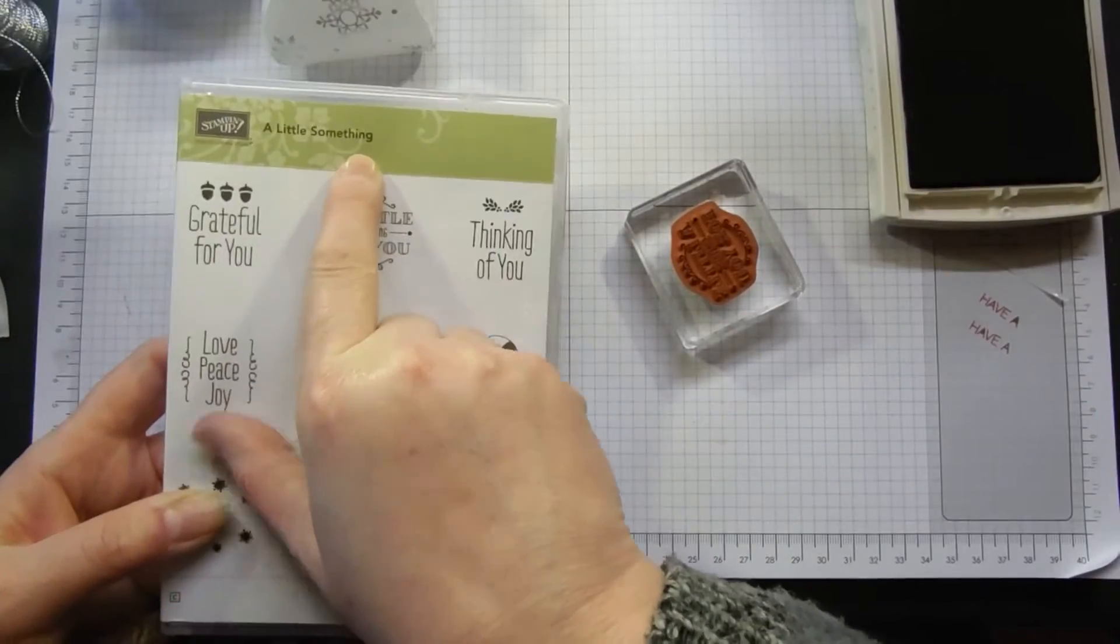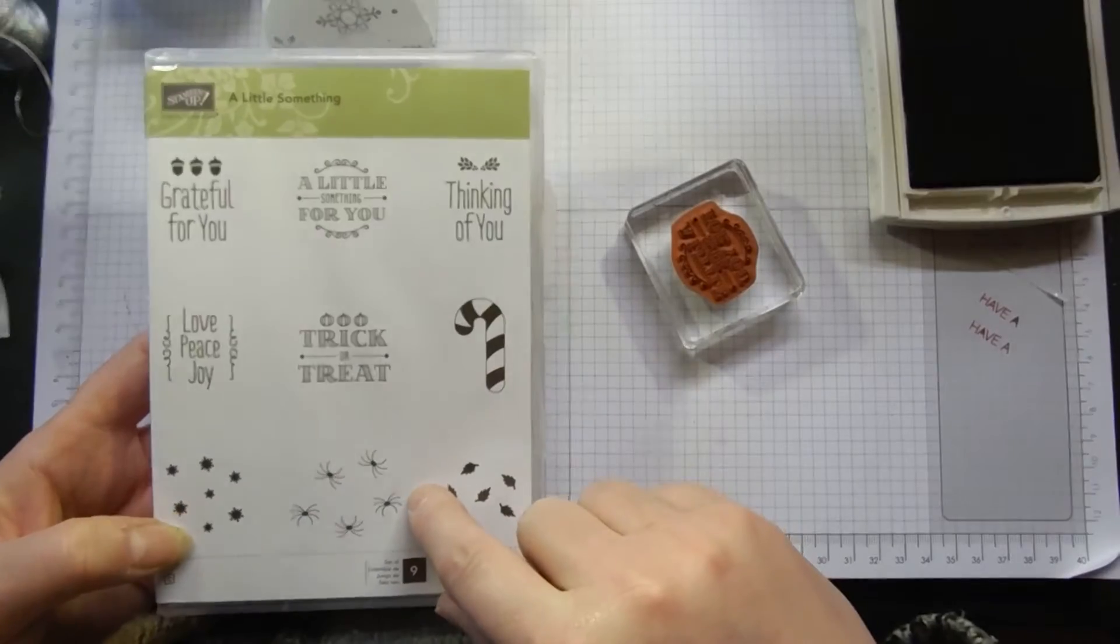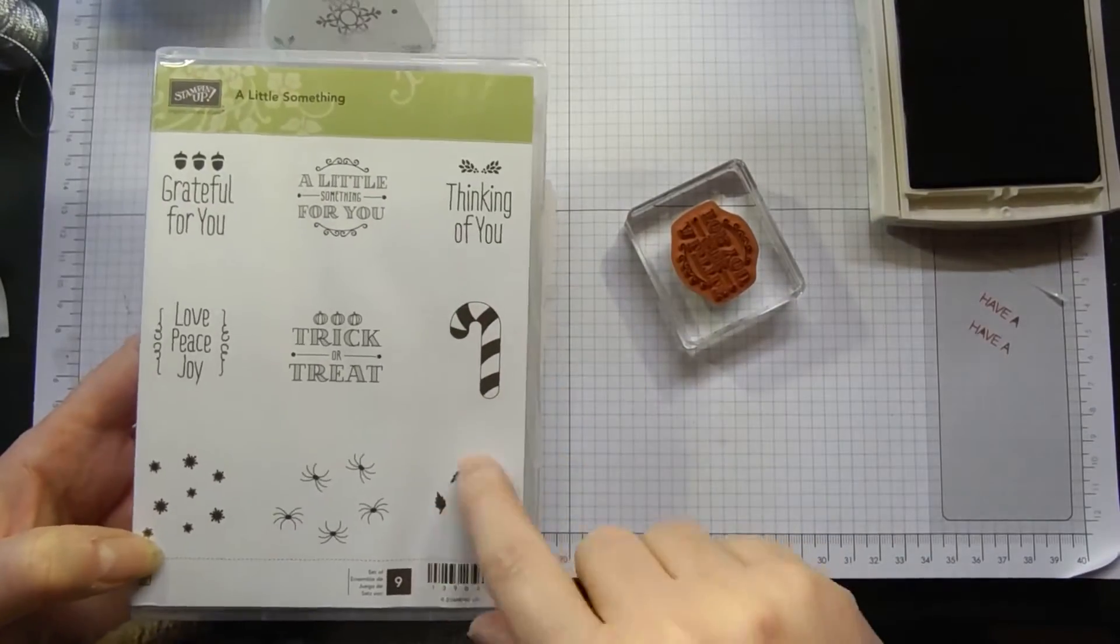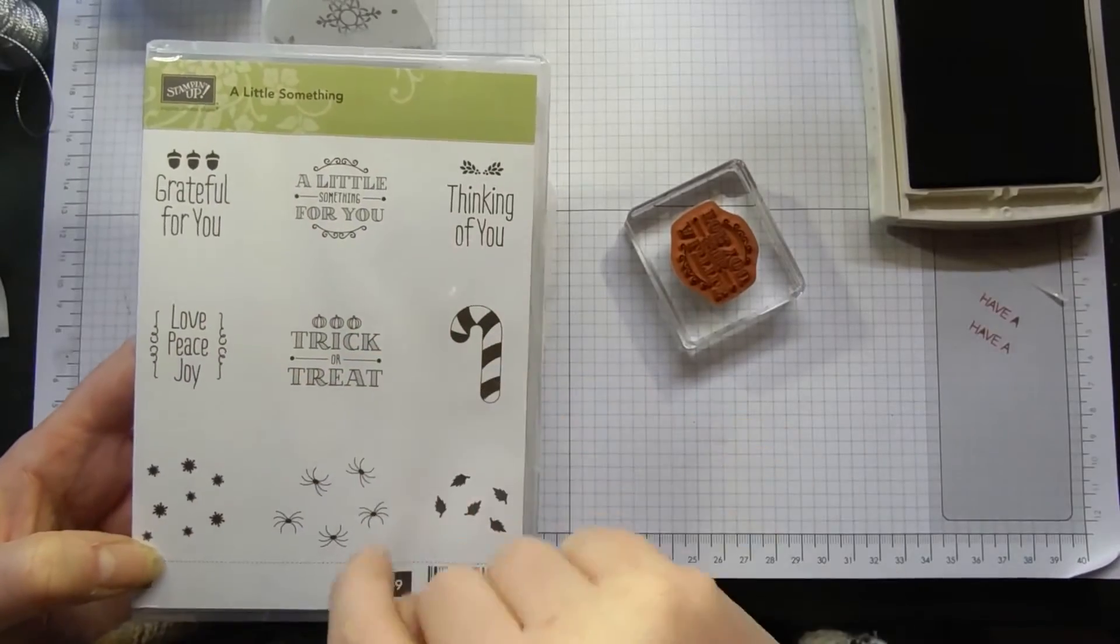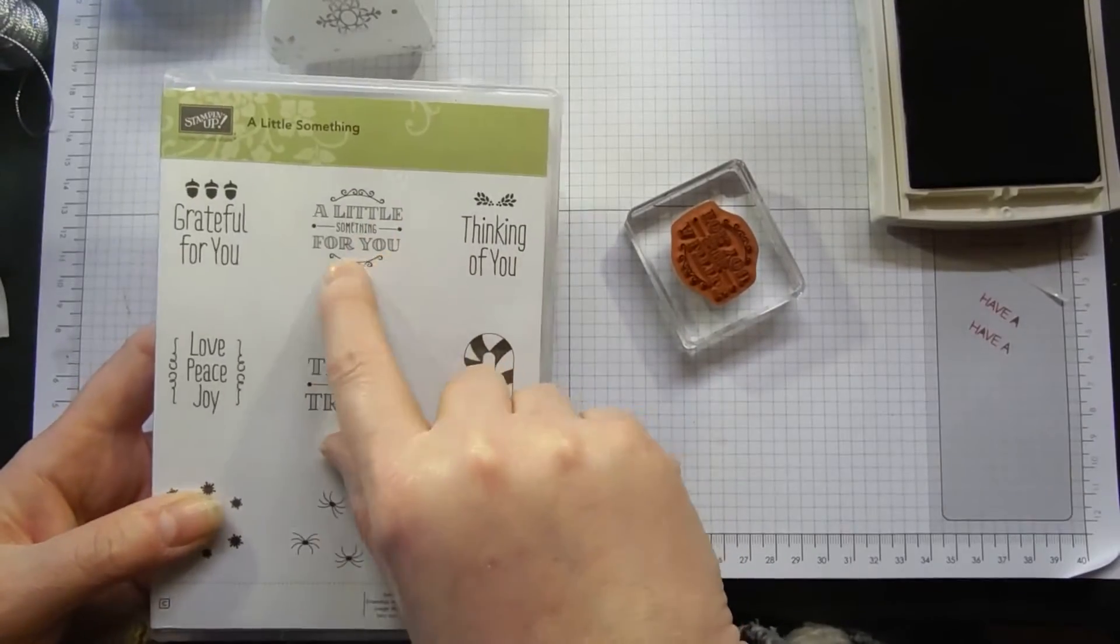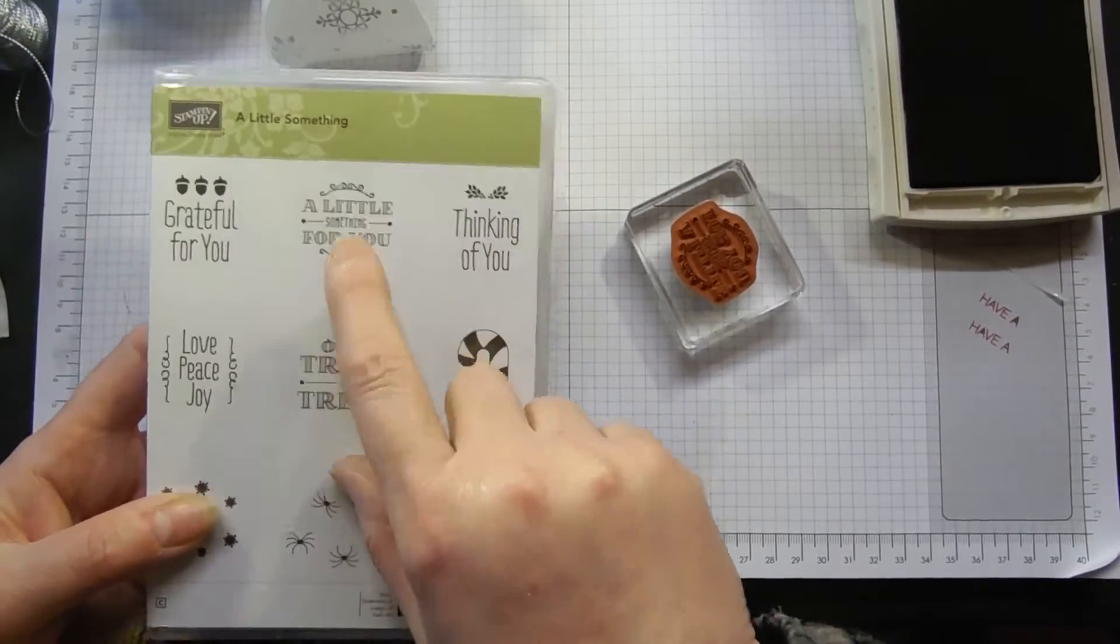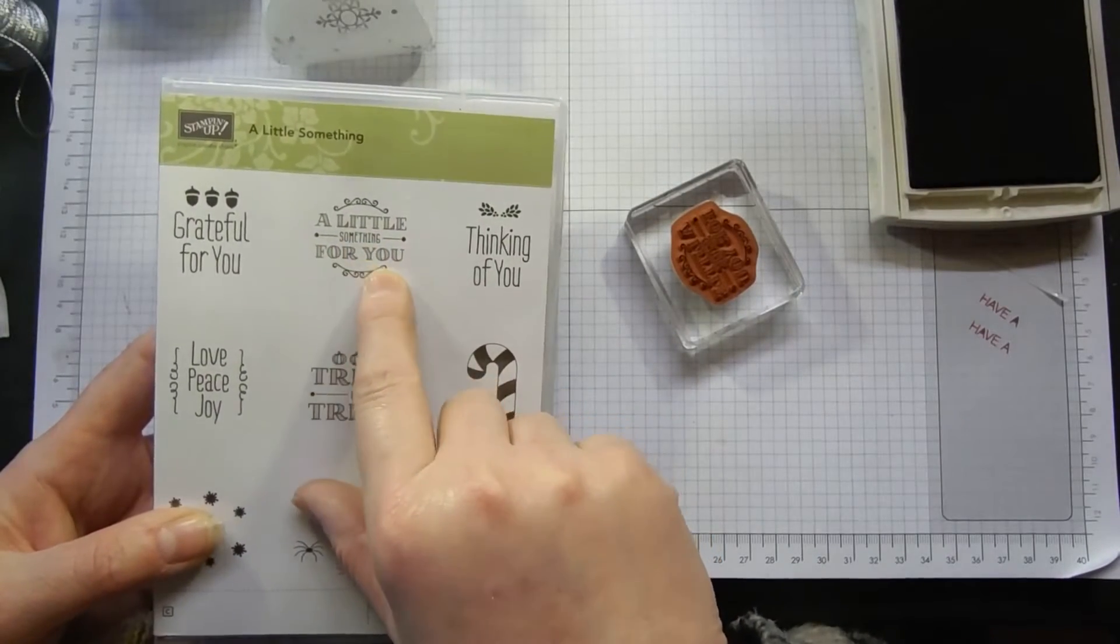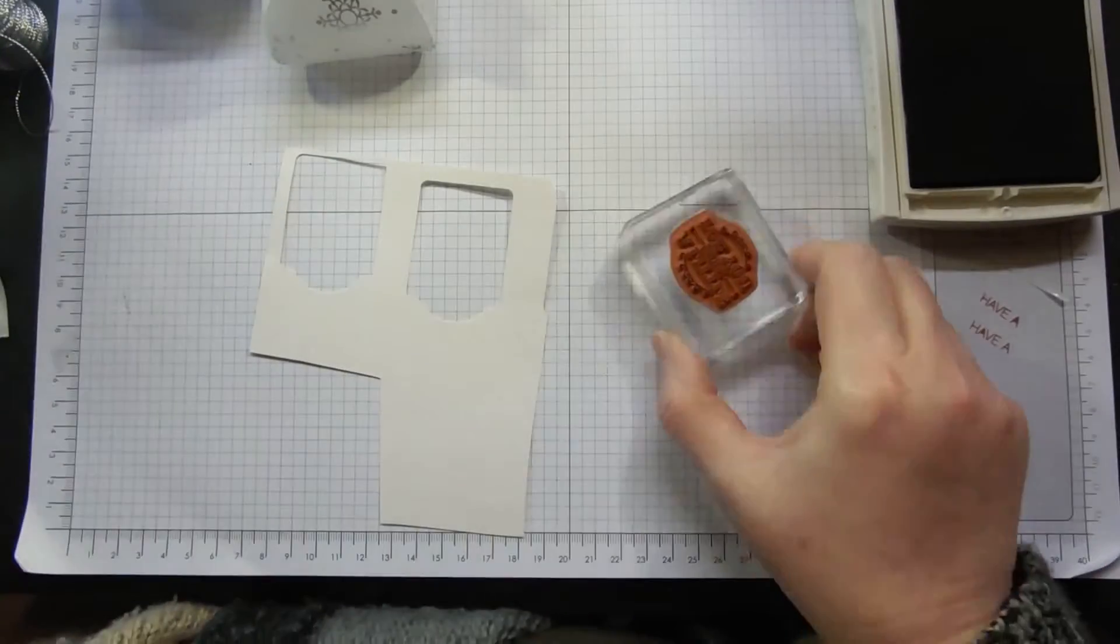This stamp comes from A Little Something. It's in the current seasonal catalogue. I think it is in the retiring bin. It's got all sorts of different little occasions, but the one that really struck me that I particularly wanted for this little box is one that says 'A Little Something For You,' and I just thought that was really sweet.